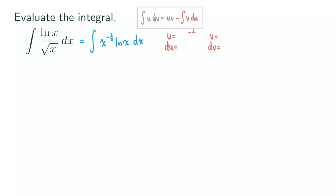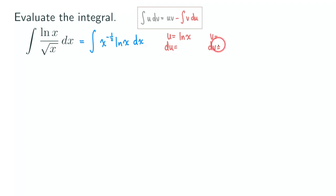So forget it — we switch. We are going to let u be ln(x). It may get worse, but at least we can differentiate ln(x), which is nice. That means we have to put dv as x to the negative 1/2 times dx.